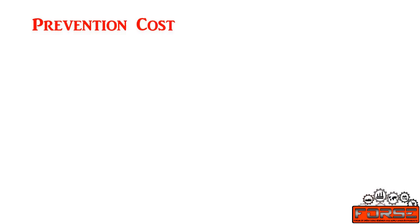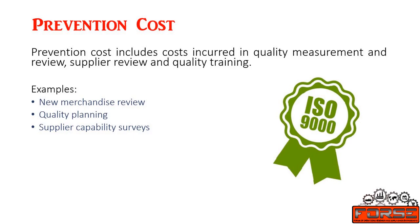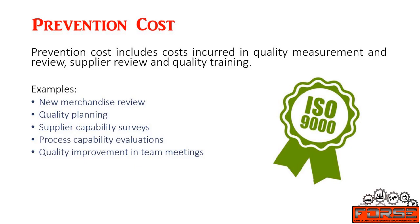Prevention cost includes costs incurred in quality measurement and review, supplier review and quality training — that is, the procedures required by an ISO 9000 quality management system. In the context of our example, the costs of all the activities specifically designed to prevent poor quality in a garment product or associated processes make up the prevention costs. For example, new merchandise review, quality planning, supplier capability surveys, process capability evaluations, quality improvement team meetings, quality improvement projects, quality education and training, and many more.